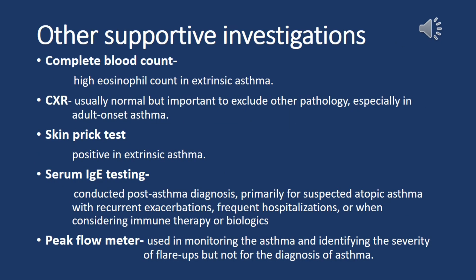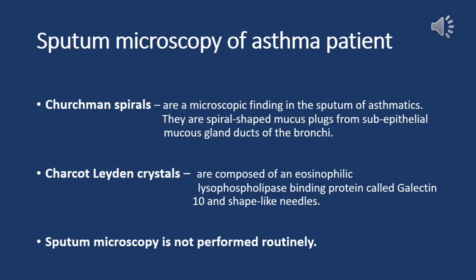Other supportive investigations: complete blood count shows a high eosinophil count in extrinsic asthma. Chest X-ray is usually normal but important to exclude other pathology, especially in adult-onset asthma. Skin prick test is positive in extrinsic asthma. Serum IgE testing is conducted post-diagnosis, primarily for suspected atopic asthma with recurrent exacerbations, frequent hospitalizations, or when considering immune therapy or biologics. Peak flow meter is used in monitoring asthma and identifying severity of flare-ups but not for diagnosis. Curschmann spirals are spiral-shaped mucus plugs found in sputum microscopy, and Charcot-Leyden crystals are composed of an eosinophilic lysophospholipid-binding protein, though sputum microscopy is not performed routinely.